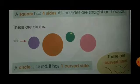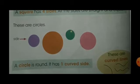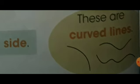These are circles. A circle is round — it has one curved side. These are examples of curved lines.